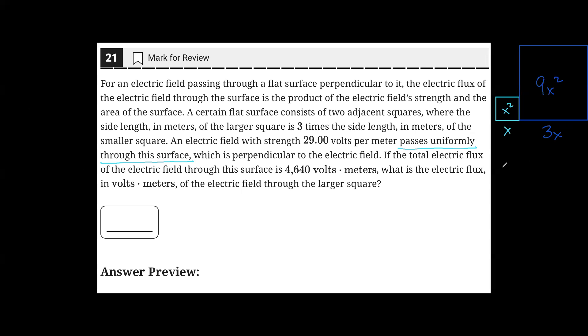Altogether, this means that the total area is equivalent to 10x squared. Now, it is stated that the total electric flux is 4640 volts times meters, and the question is asking for the electric flux only through the larger square.